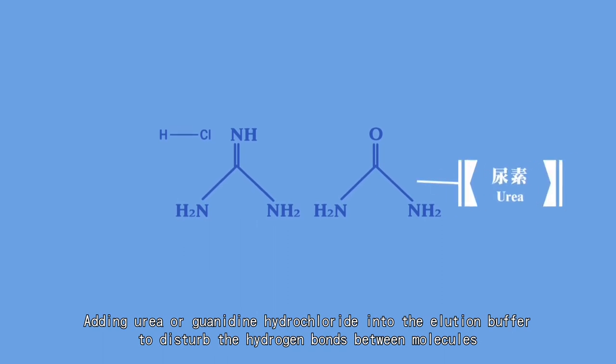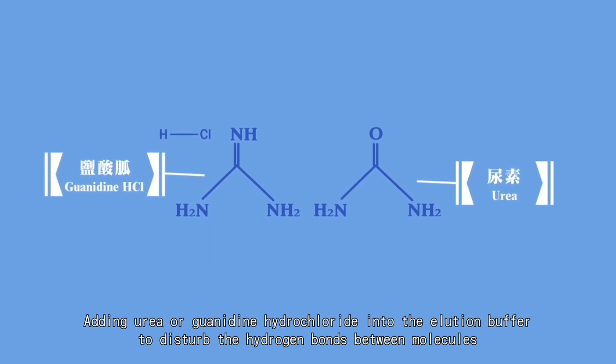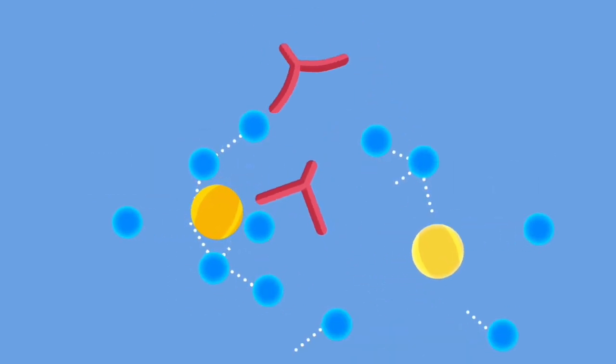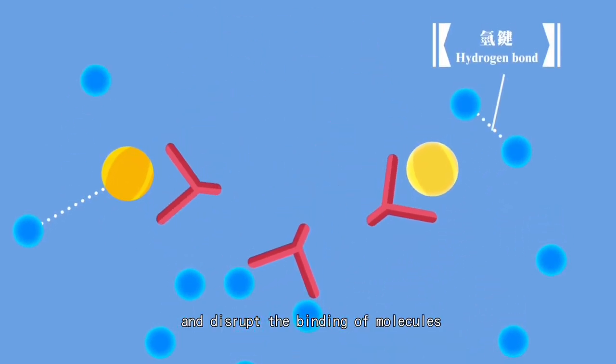Adding urea or guanidine hydrochloride into the elution buffer to disturb the hydrogen bonds between molecules and disrupt the binding of molecules.